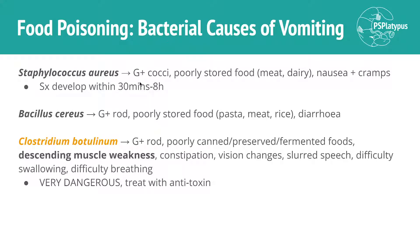Looking at food poisoning — those enterotoxin-caused GIT infections with the predominance of vomiting. We have Staph aureus, Bacillus cereus, and Clostridium botulinum. Staph aureus is very common and lives on our skin. All of these are gram-positive and generally result from poorly stored or poorly preserved foods. In Staph aureus infection you'll also get nausea and cramps; with Bacillus cereus, especially diarrhea.